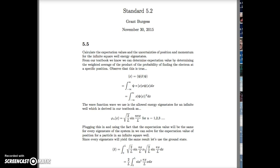From our standard 5.2, I chose to do question 5.5 from our textbook. This question asks us to calculate the expectation values and the uncertainties of position and momentum for the infinite square well energy eigenstates. From our textbook, we know we can determine the expectation value by determining the weighted average of the product of the probability to find the electron at a specific position. Observe that this is true.